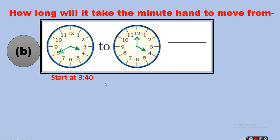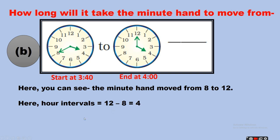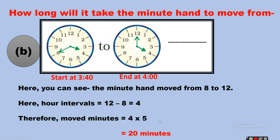Question B: starting time 3:40, end time 4 o'clock. The minute hand moved from 8 to 12. The number of intervals is 12 minus 8, which equals 4 intervals. Therefore, the minutes moved equals 4 multiplied by 5, which equals 20 minutes.